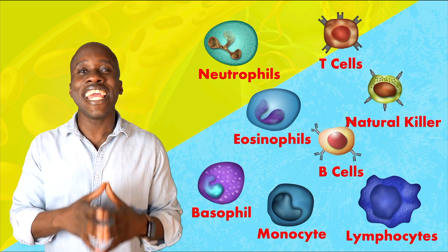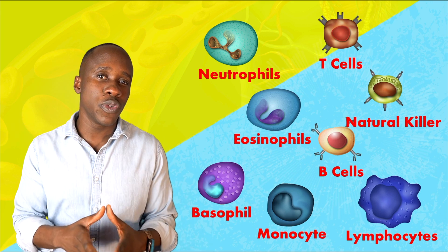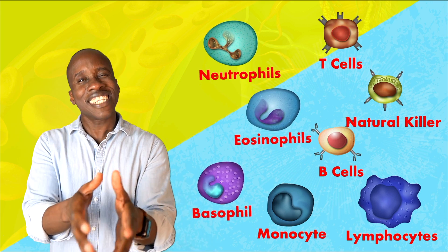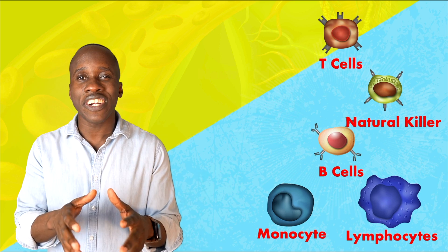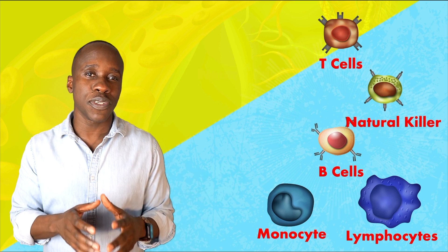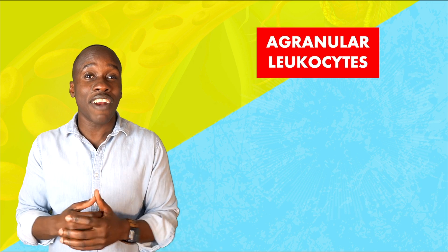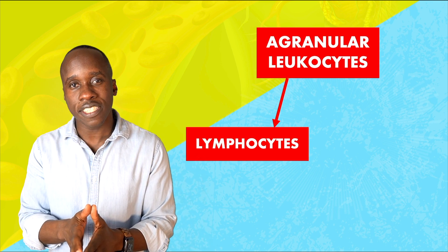Now let's talk about the agranular leukocytes. Technically these still have granules, but they're smaller and less visible. When they were first described, scientists couldn't see the tiny granules, so they assumed they were agranular and the name kind of stuck. There are two types of agranulocytes: the lymphocytes and the monocytes.